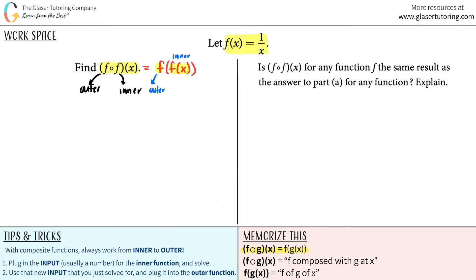So with composite functions, we always work from inner to outer function. Innermost parentheses always goes first. And we just said this is the inner function, innermost parentheses. So we're going to plug in the input. It's usually a number for the inner function and solve. However, they just gave us an x. So the first thing I'm going to do is just say, what is f of x? Well, f of x was one over x.